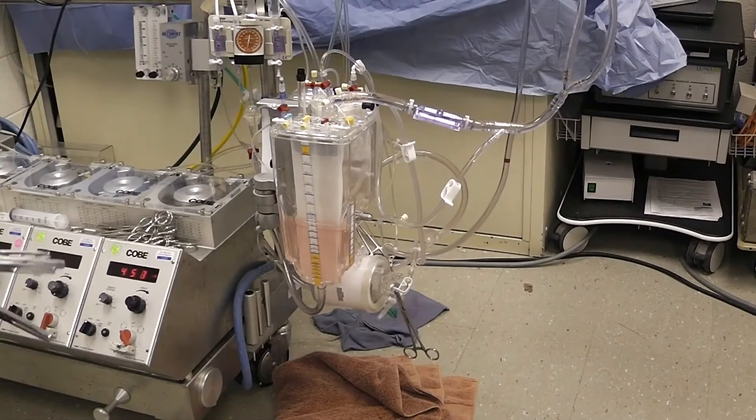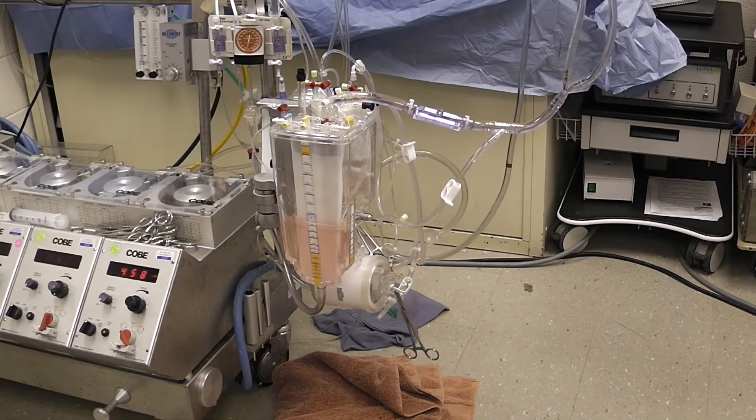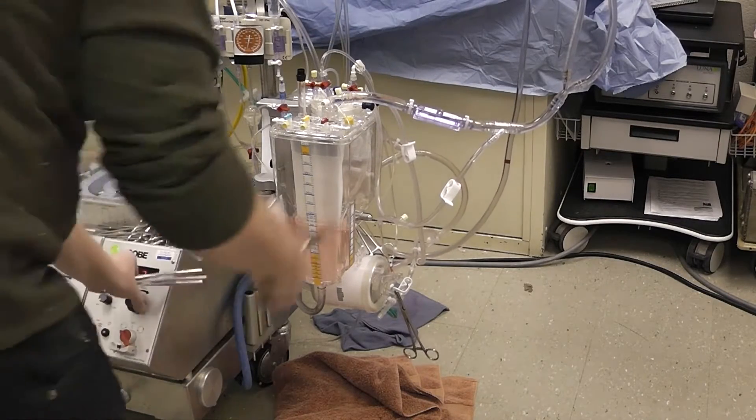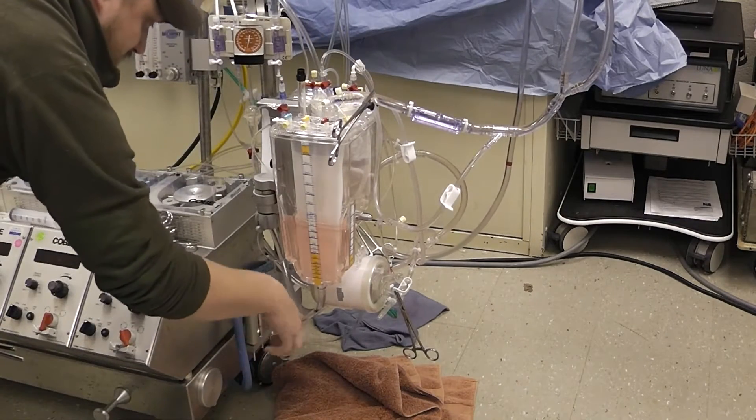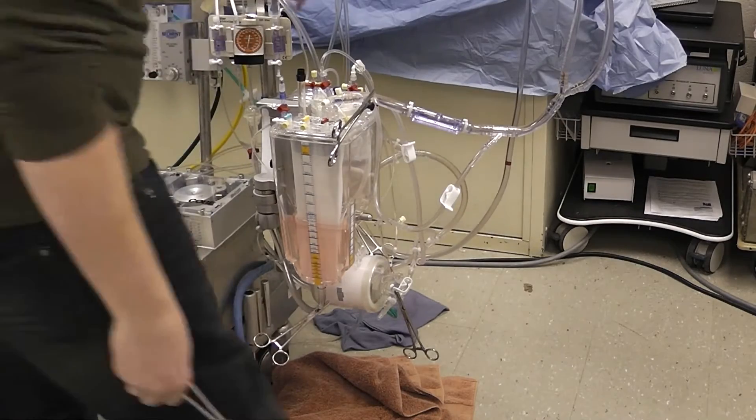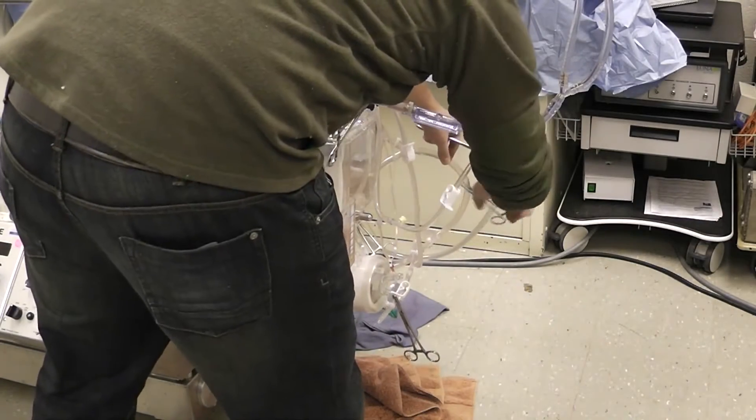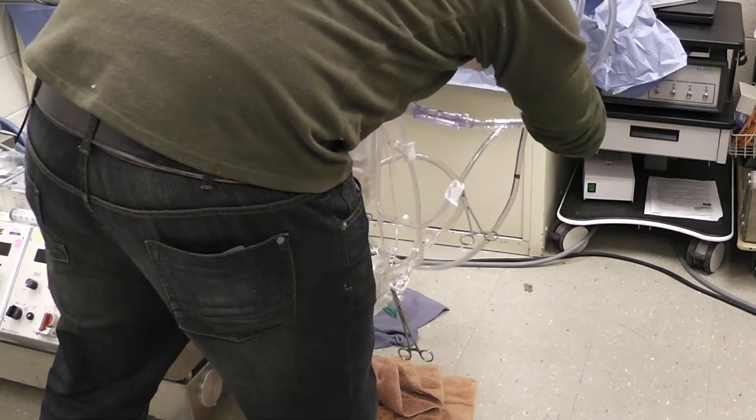So here we are, we're on pump and all of a sudden our pump head ruptures. We immediately need to shut down the pump, clamp the venous line proximal and distal to the reservoir, and clamp the arterial line proximal and distal to the arterial line filter.